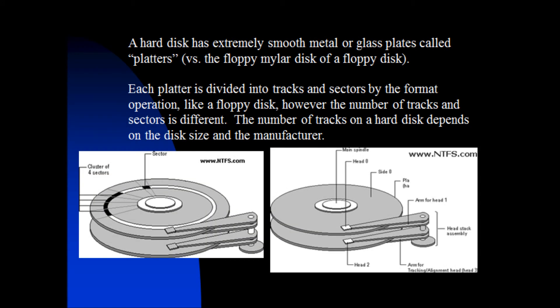A hard disk has extremely smooth metal or glass plates called platters. Each platter is divided into tracks and sectors by the format operation. Like a floppy disk, however, the number of tracks and sectors is different. The number of tracks on a hard disk depends on the disk size and the manufacturer.